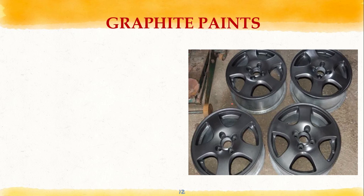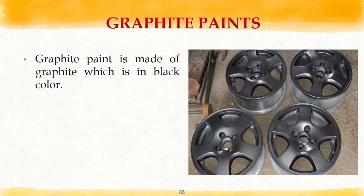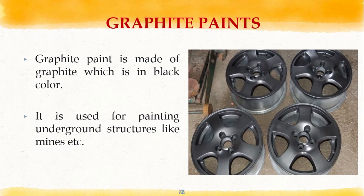Next are graphite paints. Graphite paint is made up of graphite, which is black in color. It is used for painting underground structures like mines. Iron structures are also coated with graphite paints.